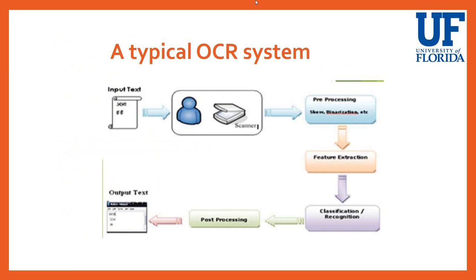This is how a typical OCR system looks: you give an input — an image containing text — and it goes through various stages: pre-processing, feature extraction, and character recognition. Similarly, in my implementation, I output the extracted characters into a text file after following all these steps.